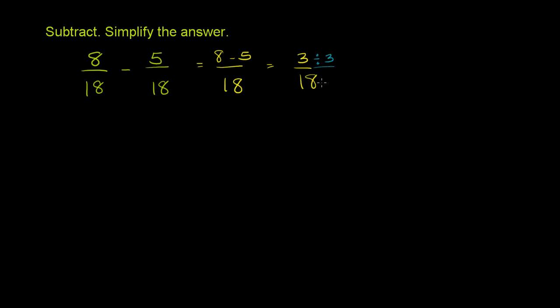Divide 3 by 3, divide 18 by 3. 3 divided by 3 is 1, 18 divided by 3 is 6. So you get 1/6.